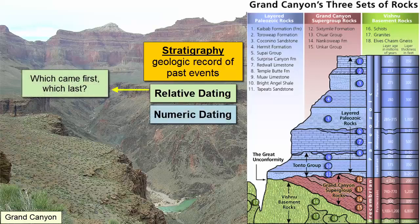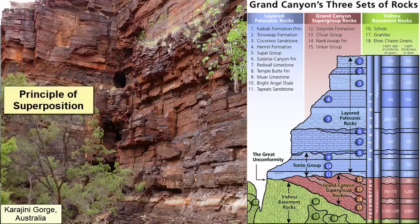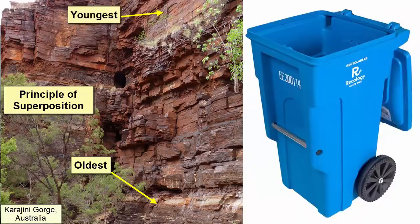Relative dating simply describes which events happened before or after another. For example, in an undisturbed pile of sedimentary layers, according to the principle of superposition, the layers on the bottom will be older than those deposited on top. A similar process happens with your recycling of newspapers — the oldest newspaper, the one you first threw away, would be on the bottom, and the most recent one on the top.